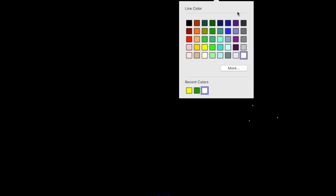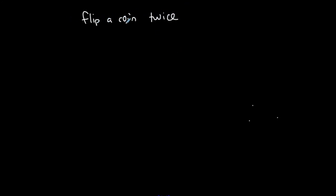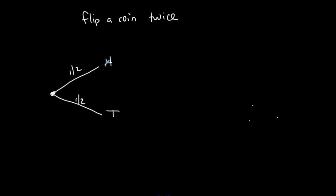Let me do another quick example: flipping a coin twice. On my first flip, the possible outcomes are heads or tails, each with a one-half probability. I'll map out both branches — getting heads first, or getting tails first — and then flip again for each of those outcomes.